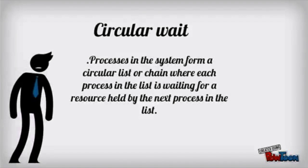Circular wait. What is circular wait? Circular wait is whereby the processes in the system form a circular list or chain where each process in a list is waiting for a resource held by the next process in the list.